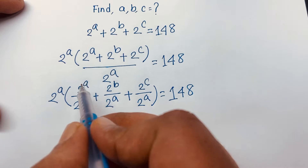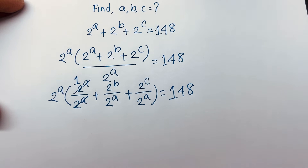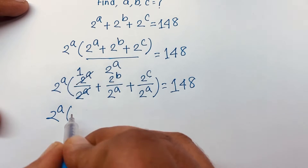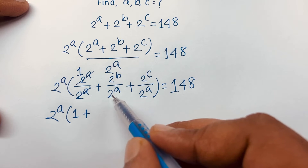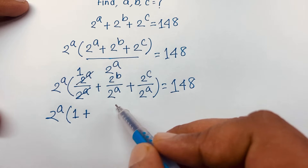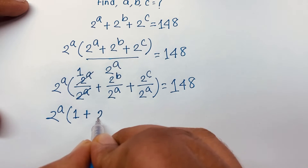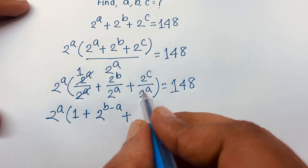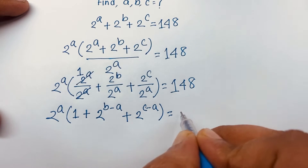The 2^a over 2^a cancels to give 1. Then, applying exponential rules with the same base, 2^b divided by 2^a becomes 2^(b−a), and 2^c divided by 2^a becomes 2^(c−a). So we get: 2^a times (1 + 2^(b−a) + 2^(c−a)) = 148.